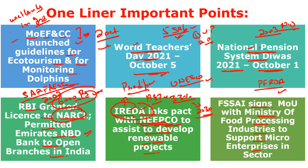IREDA was established in 1987 to focus specifically on renewable energy, with headquarters in New Delhi. Its Chairman and Managing Director is Pradip Kumar Das. FSSAI signed an MOU with the Ministry of Food Processing Industries to support micro enterprises. Food Safety and Standards Authority of India (FSSAI) signed the MOU to support self-help groups, farmer producer organizations (FPOs), and producer cooperatives to improve the standard of their food businesses. FSSAI was established in 2011, headquartered in New Delhi, and the Chairperson is Rita Teotia.